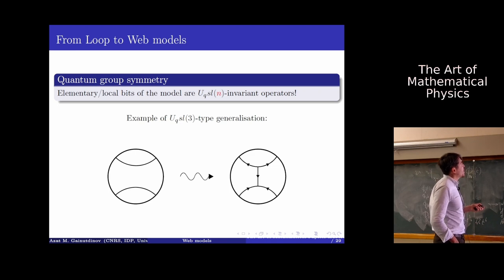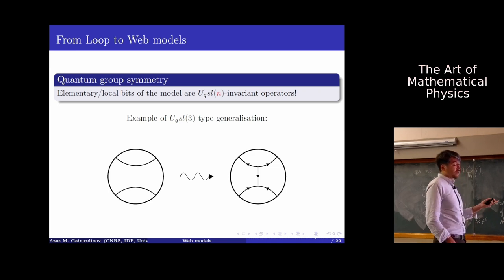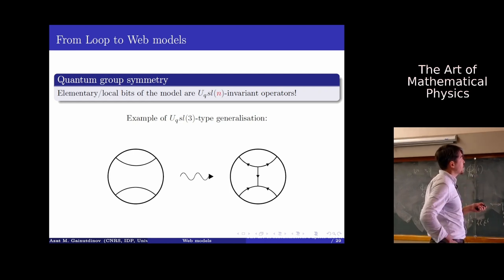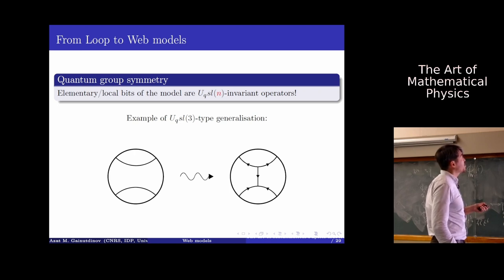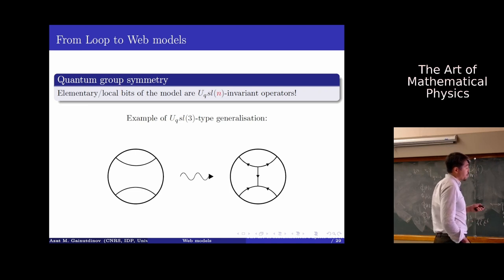In U_q(SL3), if you fuse fundamental with fundamental, you don't get an invariant. Instead, you get the second fundamental representation appearing in one of the channels — that's why there is a branching, with an arrow pointing down indicating anti-fundamental. Similarly, the anti-fundamental can be embedded in the product of two fundamentals. That's why we have branchings, and for every SL_N there will be corresponding branchings.